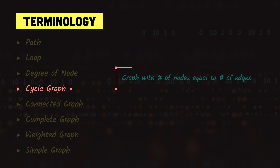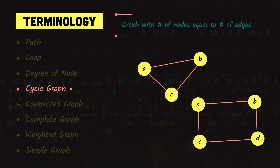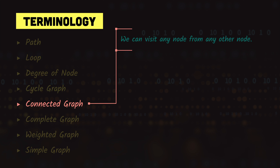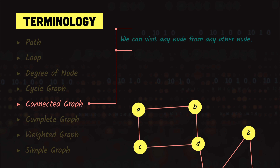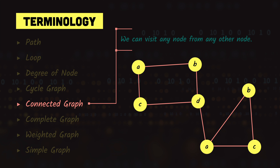Next we have a cycle graph — a simple graph where all nodes are connected to each other and the number of edges equals the number of nodes. Then we have a connected graph, where we can visit any node from any other node; what matters is having a path between any two nodes. If we remove an edge that breaks this connectivity, the graph becomes a disconnected graph.